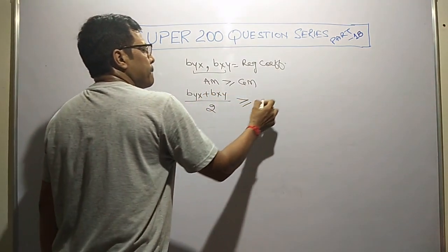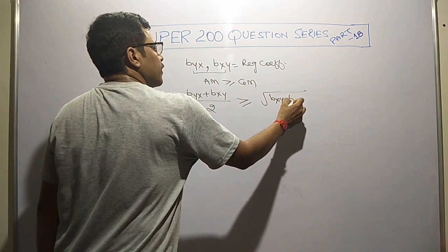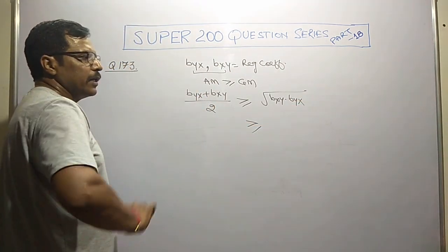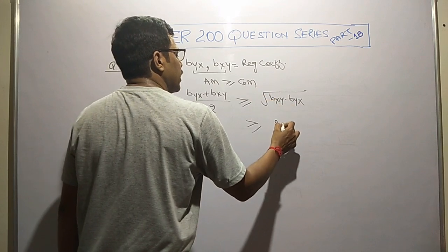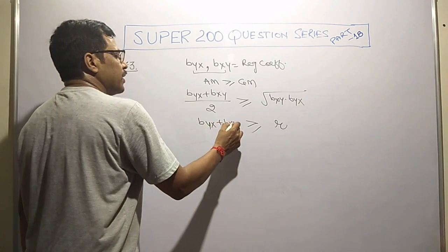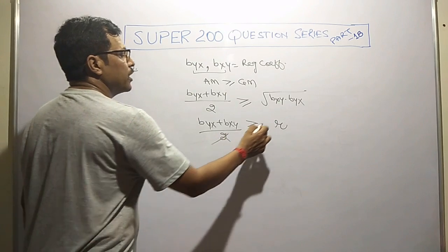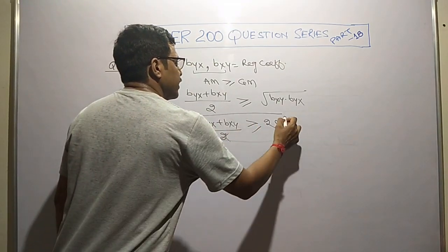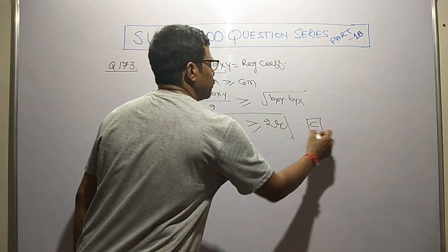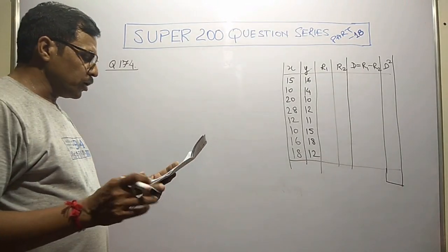Arithmetic mean we can have by averaging: byx plus bxy over 2, and geometric mean by square root of product of these two values, which equals r. So byx plus bxy by 2 is greater than or equal to r. This 2 is transferred towards the right hand side, and this option is shown in option C.